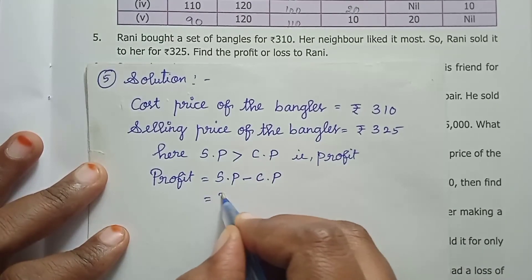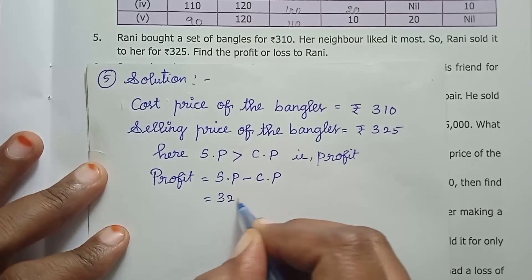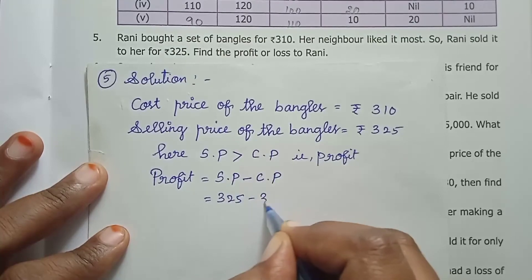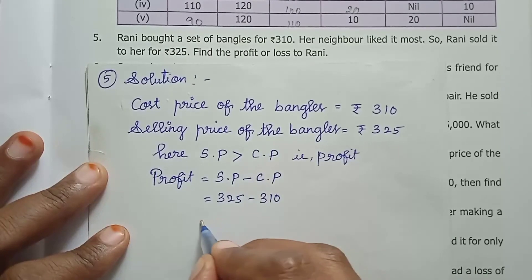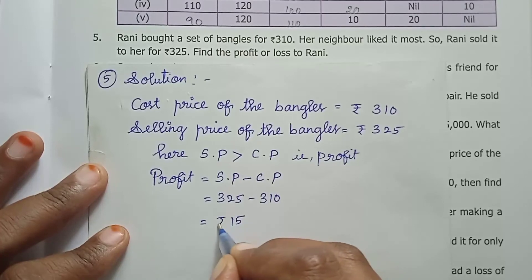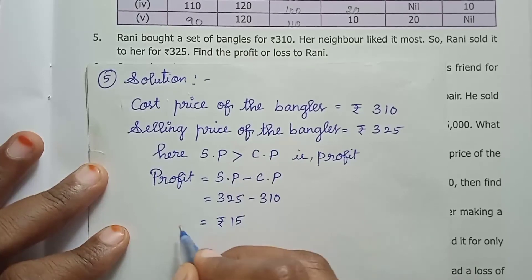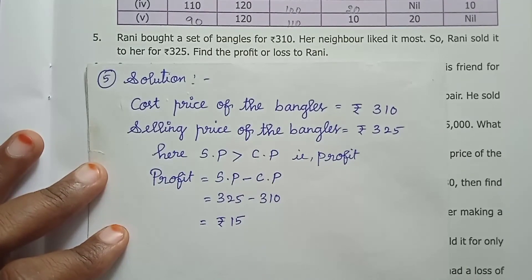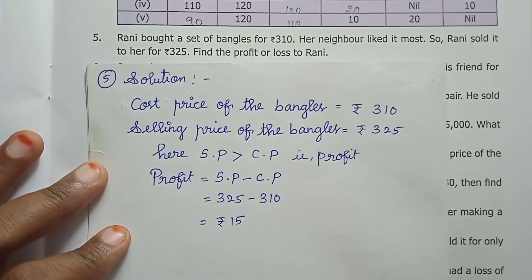Selling price is Rs. 325, cost price is Rs. 310. Subtract: 325 minus 310 equals 15. So the profit is Rs. 15.